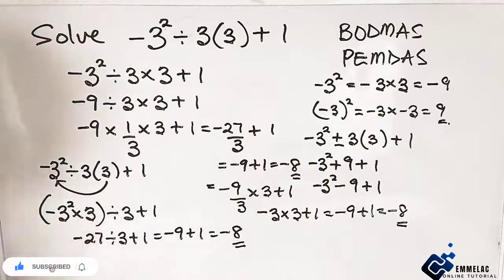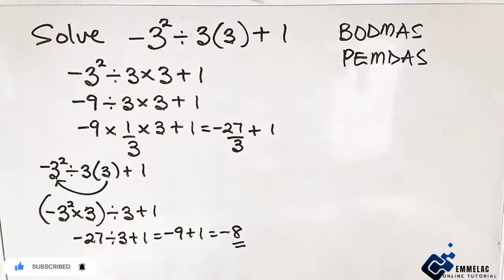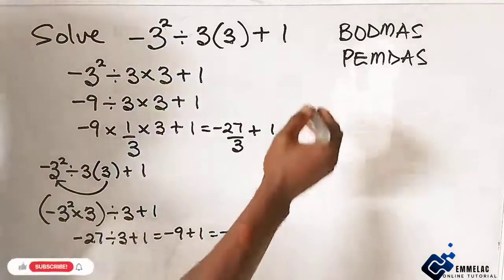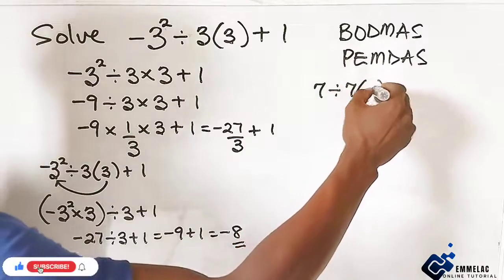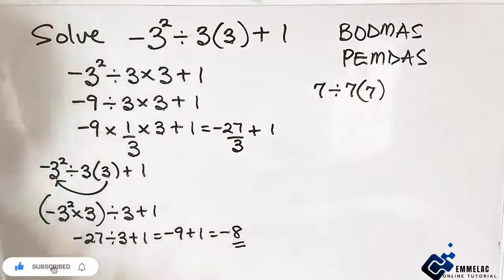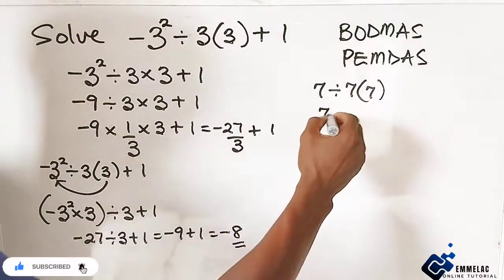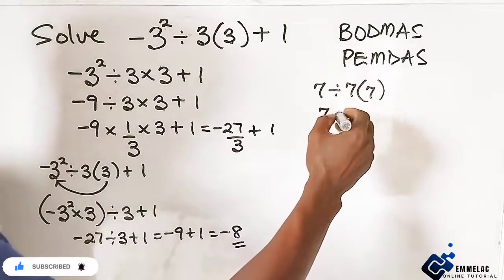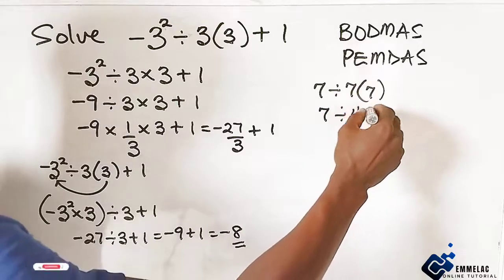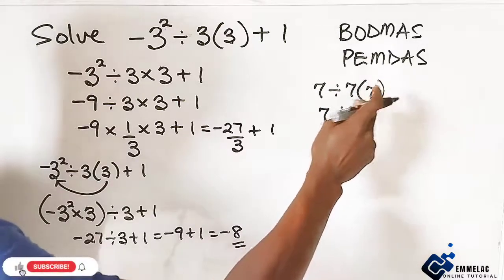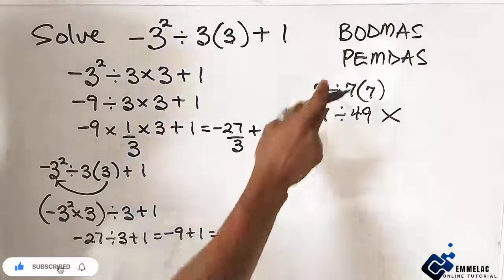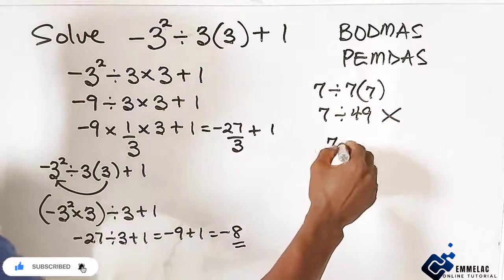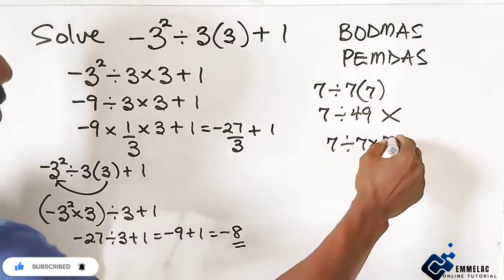Now let me see for another example. Now let me say we have 7 divided by 7 into 7. Now it will be an error for you to say 7 divided by 49 because you are multiplying through this. It is an error. This is wrong. Now what we need to do here is this is 7 divided by 7 times what? 7.